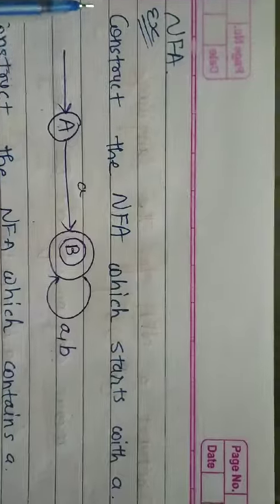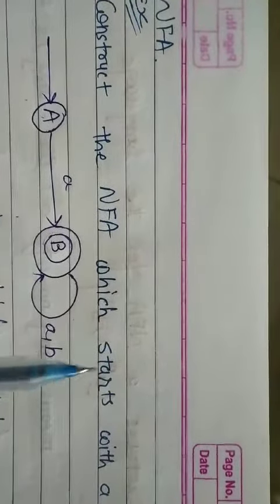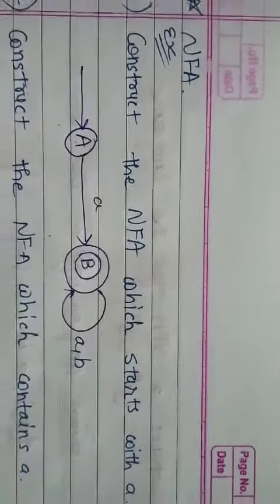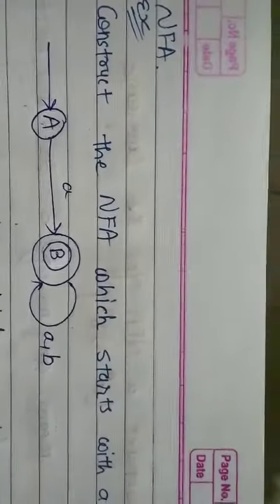Now, we have an example. Construct the NFA which starts with A. I mean, if it starts with A and ends with B, there is no difference between A.